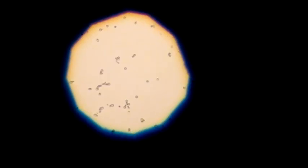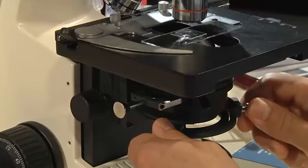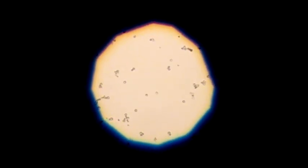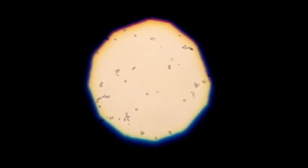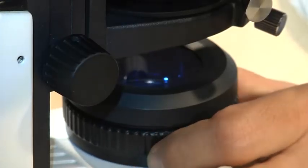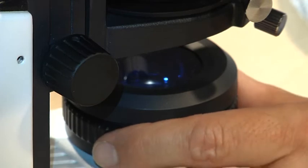If the spot of the luminous field diaphragm is eccentric, we carefully turn the adjustment knobs of the condenser. When the spot is in the center of our viewfield, the condenser is in line with the optical axis of the microscope. Now we open the luminous field diaphragm until the edges are just outside the viewfield.